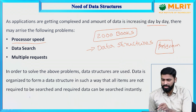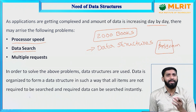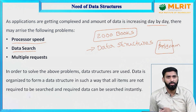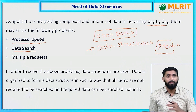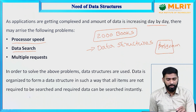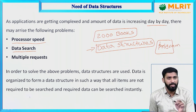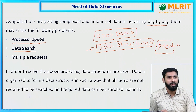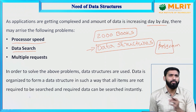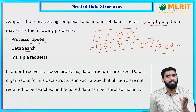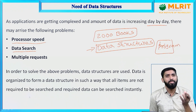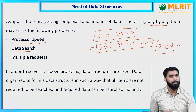The second problem is data search. Here we have 2000 books and we are searching for a particular book. If the data is not in an organized manner, it is very difficult to find that book. If the data structures book is in the last row and you don't know how it is organized, then retrieving the data takes much time.